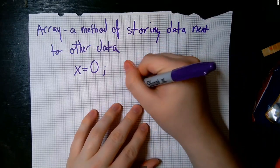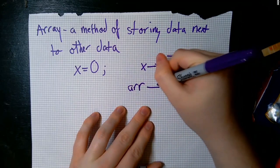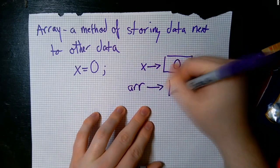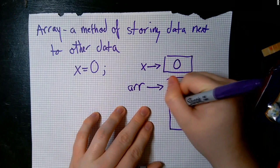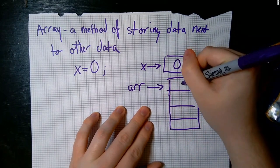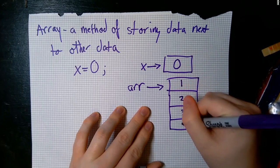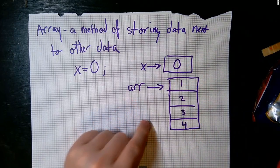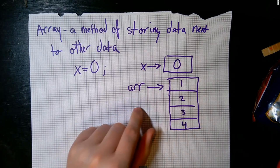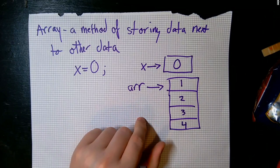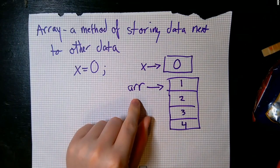For example, we can have our array r with a few boxes. Maybe one contains 1, 2, 3, and 4 like so. All these boxes are given the name r, so you can think of this as an entire pile of boxes standing on top of each other who are all named r.